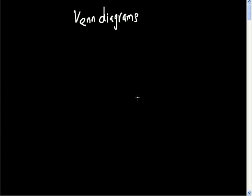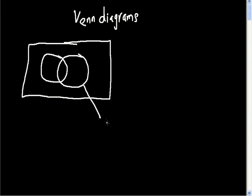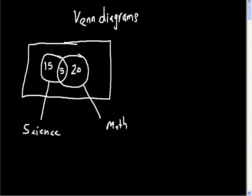In this video you're going to learn about Venn diagrams, which you'll come across in your GCSE maths syllabus. A Venn diagram typically looks like a box with circles inside it. For example, this circle represents students who do maths, and this circle represents students who do science. Let's put in some values: 15, 20, and 5 in the middle.